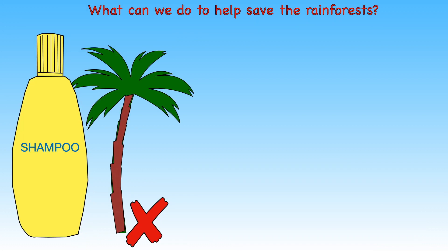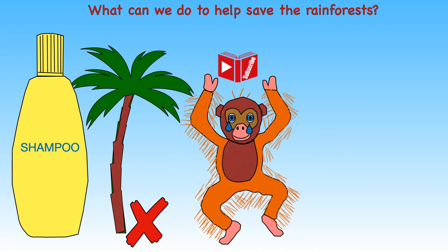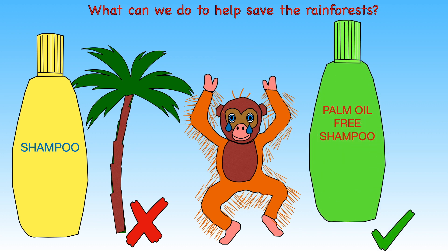So what can we do to help save the rainforest? We can encourage people to buy things that do not contain palm oil. Palm oil is a type of vegetable oil made from the fruit of the palm oil tree. It is found in half of all household and food products — it is an ingredient in shampoo, toothpaste, ready meals, lipstick and much more. Orangutans are losing their homes due to trees being chopped down for palm oil. Luckily, many companies are now making palm oil-free products.